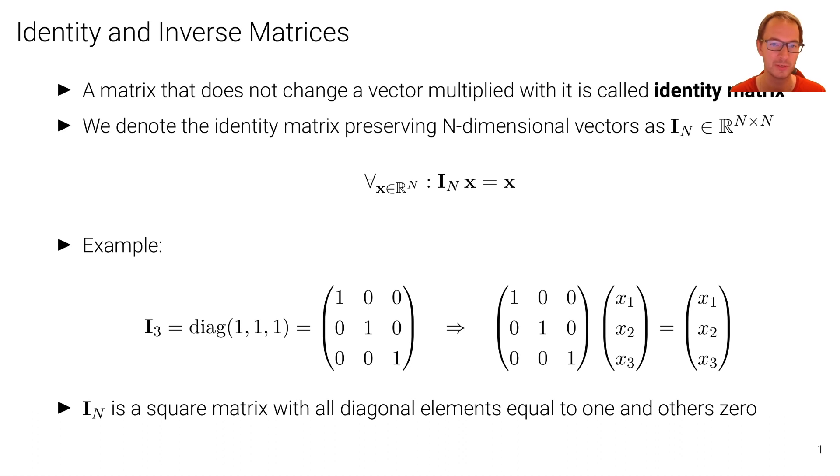And of course this matrix looks similar just with one more dimension for four dimensional vector spaces. And we can also easily see that this identity matrix preserves three dimensional vectors. Any vector that we put in that we multiply to that matrix is going to be preserved.